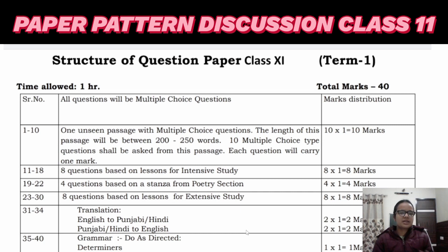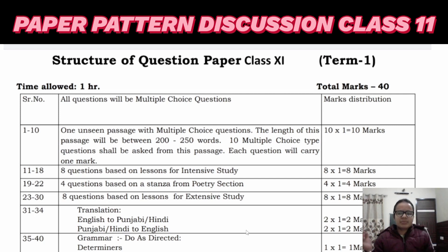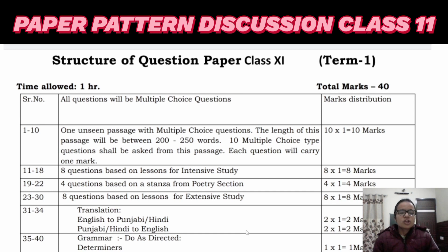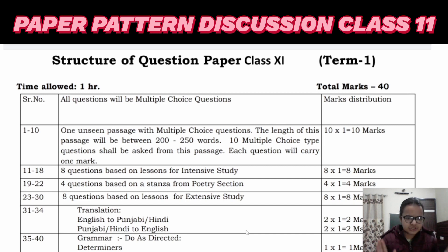Then there is translation — English to Hindi/Punjabi, and Punjabi/Hindi to English. It is very simple. English to Hindi/Punjabi will be for two marks, and Punjabi/Hindi to English will also be for two marks. This section is comparatively very simple and I have shared MCQs for it as well.